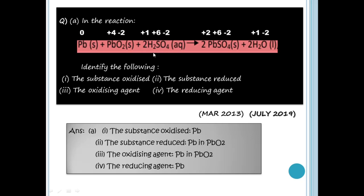Then hydrogen and sulfur oxidation numbers — I will write these on paper. Hydrogen is +1, sulfur is +6, oxygen is -2. We write the oxidation numbers on the paper using the same process.